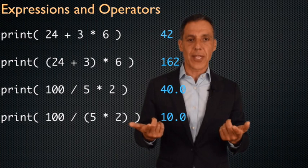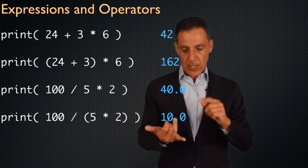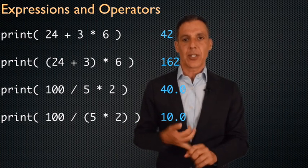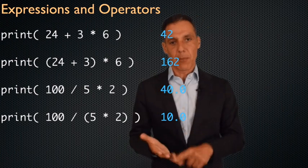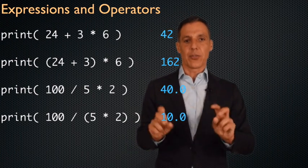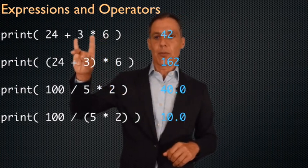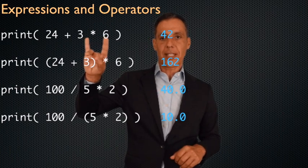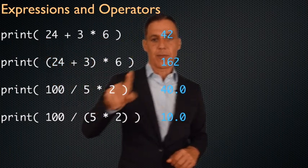The standard order that you learned in arithmetic works here. Multiplication and division first, left to right, and multiplication and division take priority over addition and subtraction. Here we would multiply 3 and 6 and then add the result to 24 to get 42.